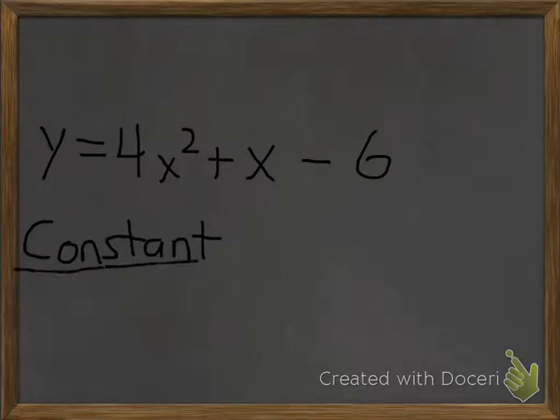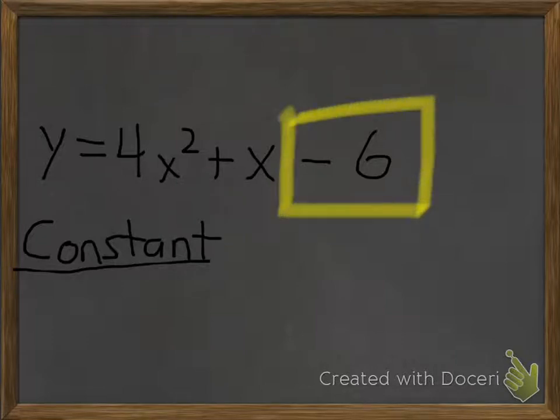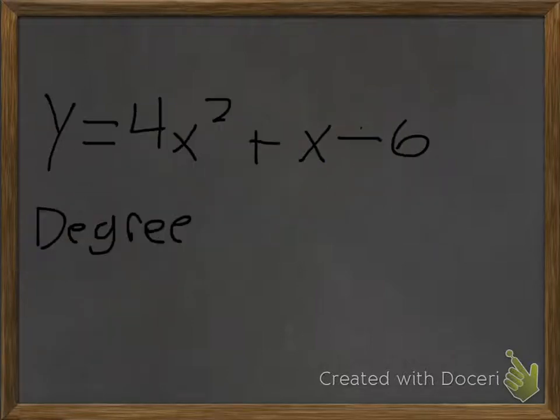Now we're going to learn some vocabulary about polynomial functions. A constant in a polynomial function is the number without a variable next to it. In this case, it's going to be negative 6, because it doesn't have a variable next to it.